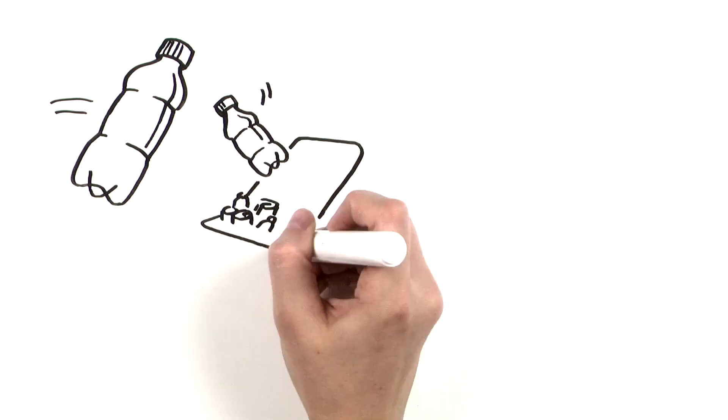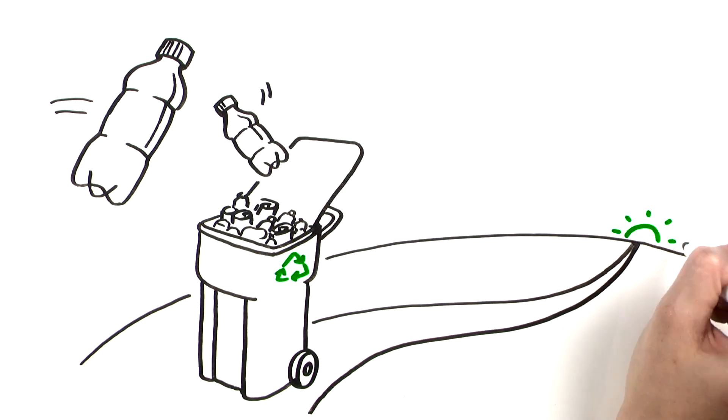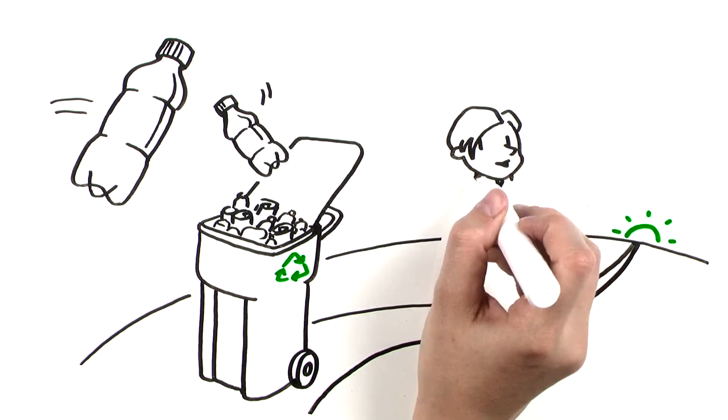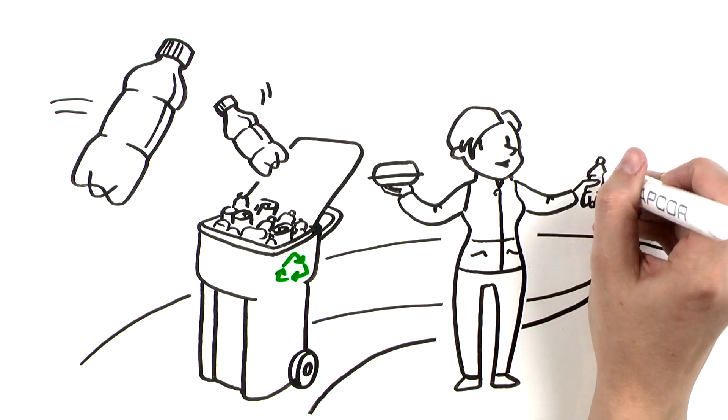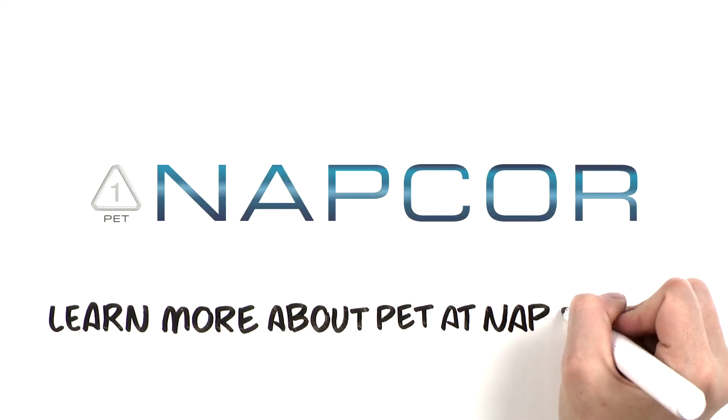So toss your PET bottle in the recycling bin and ensure its destiny is a valued domestic raw material. It might end up in your next water bottle, fleece jacket, or takeout container. Learn more about PET at napcor.com.